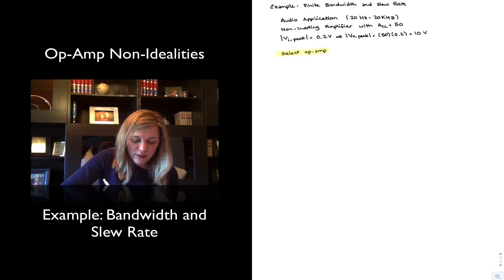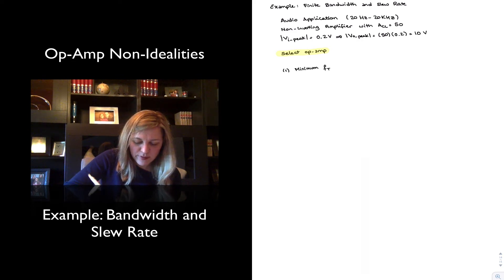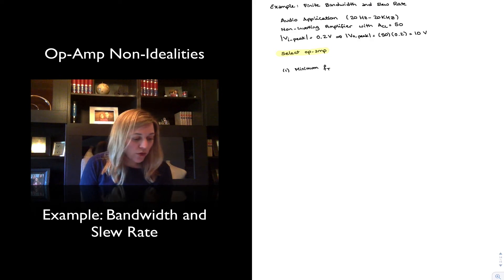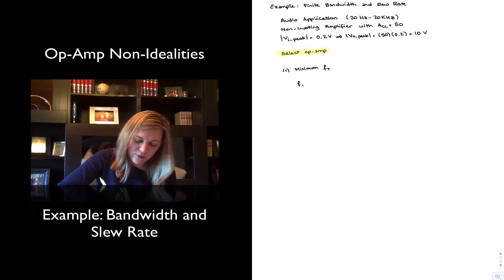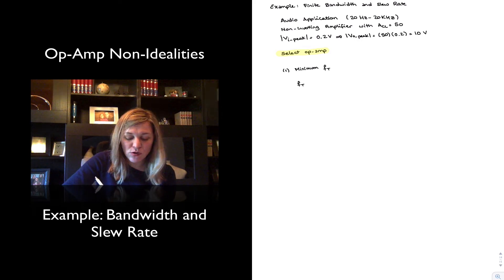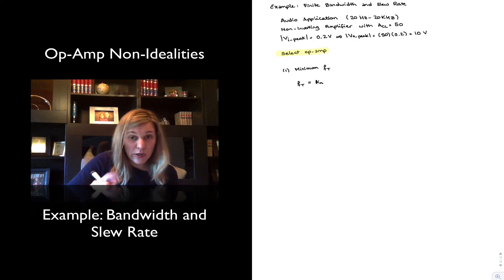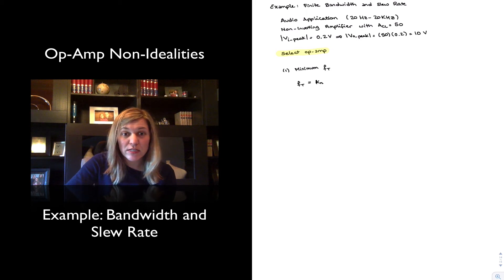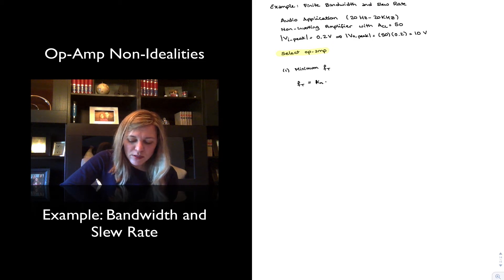So let's first calculate the minimum bandwidth that our op-amp needs to have, the minimum transition frequency. So minimum fT for the op-amp. And we know that the gain bandwidth product is a constant for an op-amp and so the unity gain frequency or transition frequency or small signal bandwidth, however you want to refer to it, is going to be equal to the product of the closed-loop gain, but it is the noise gain. It just so happens in the case of the non-inverting amplifier, the noise gain is equal to the signal gain, times the closed-loop bandwidth.